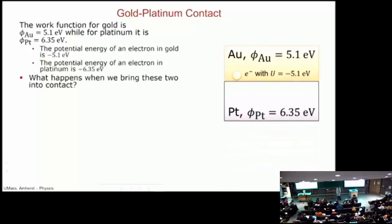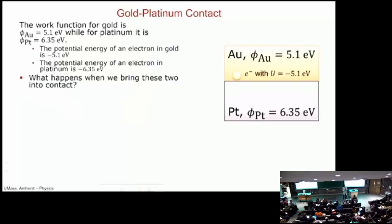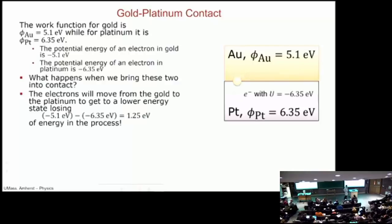Now let's touch them together. What's going to happen when we touch these two things together? Well, the electron in the gold is going to slide down, because now that's a lower energy state. In gold it has a potential energy of minus 5.1. In platinum it has a potential energy of minus 6.35. It can lower its potential energy by one and a quarter electron volts by sliding down. And so that's what it will do.